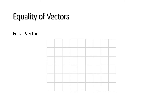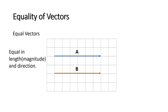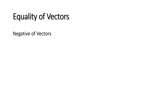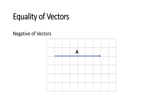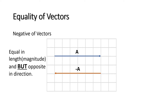Let us now talk about equality of vectors. When we say equal vectors, let's say we have a vector A which has a particular length or magnitude towards the east direction, and then we have another vector with the same length or magnitude and the same direction towards the east direction. If two vectors are equal in length and direction, we can say they are equal. Now, when it comes to the negative of vectors, if two vectors are equal in length or magnitude but opposite in direction, then the negative of vector A is negative A.